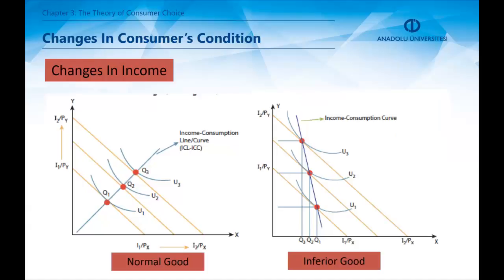Changes in income may cause different shifts. Remember, inferior goods are consumed higher with low income rates. Likewise, when income increases, the consumption of an inferior good decreases. So, this is shown in the figure on the right. If one of the goods is inferior, the income consumption curve becomes negatively sloped.